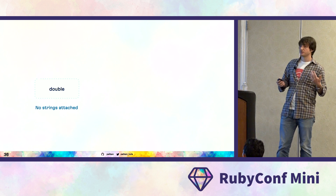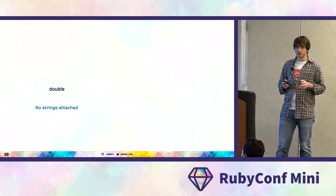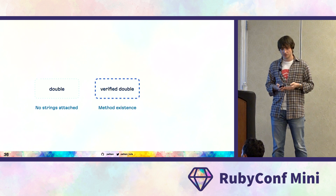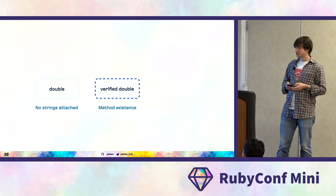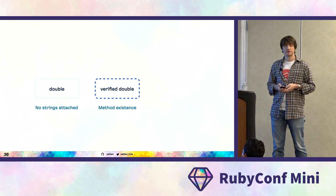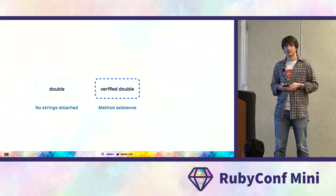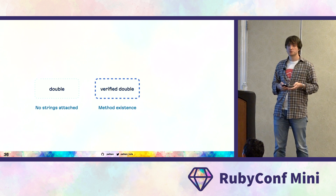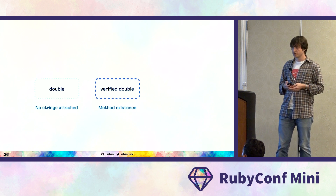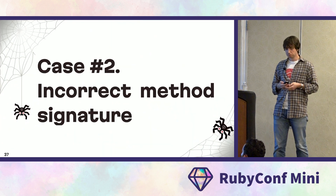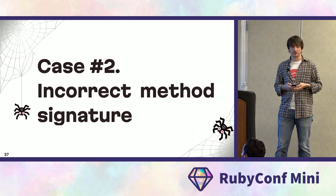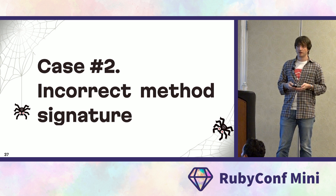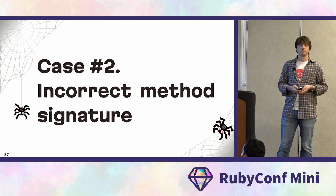We have different types of doubles. A simple double with no commitments, and verified doubles — that's the RSpec term — like instance_double, which checks for method existence. Minitest also checks for method presence by default when you use stubs. But that's not the only thing verified doubles take care of. They also help with other false positives, such as when the method signature is not valid.